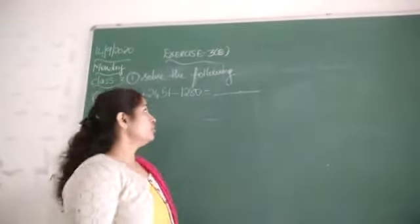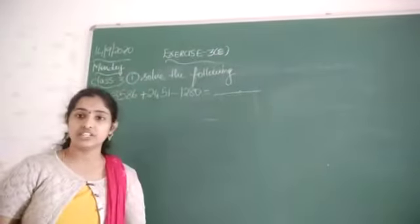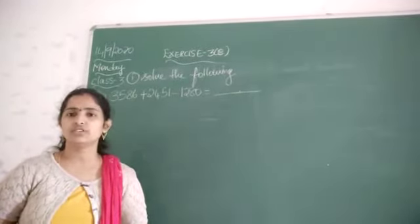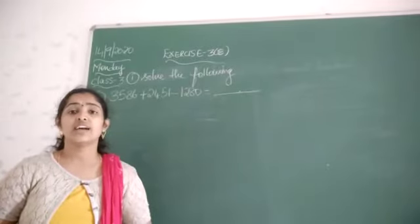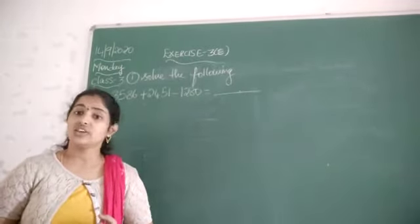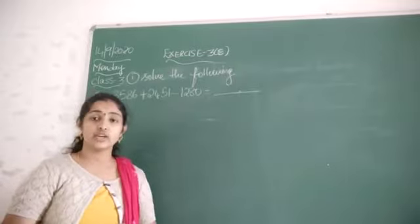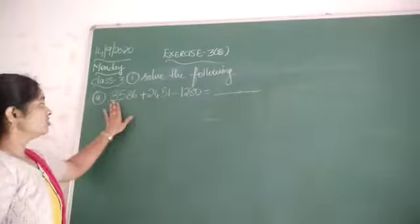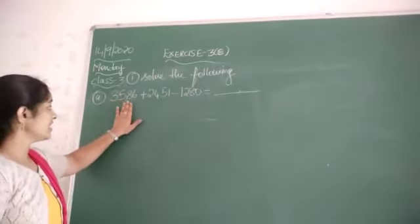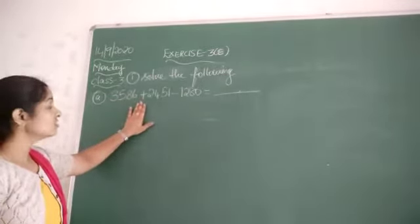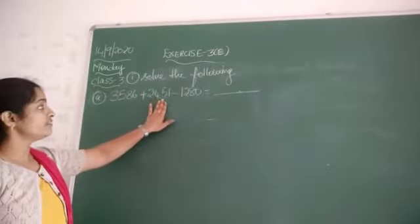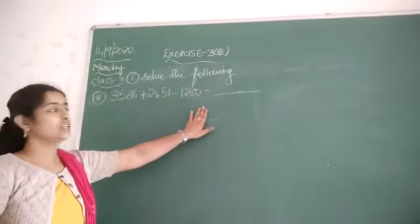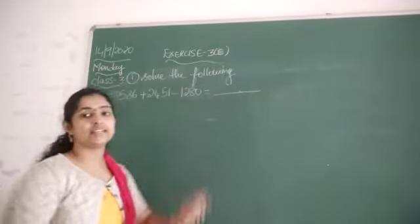Welcome back children. Now look at the next exercise 3D. In this exercise we are going to solve the mixed problems. Mixed problems means how to do addition and subtraction. Both you are going to do in the given one. So first let us look at the question: 3586 plus 2451 minus 1280 is equal to blank.